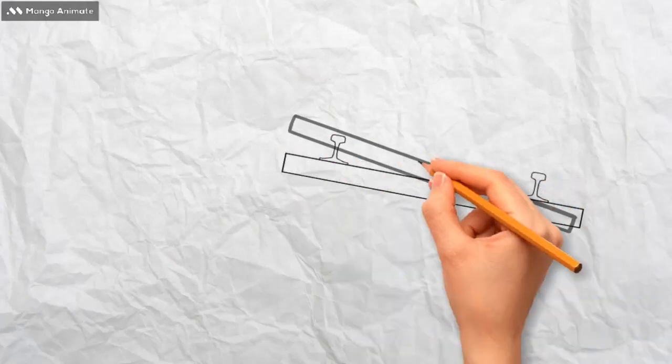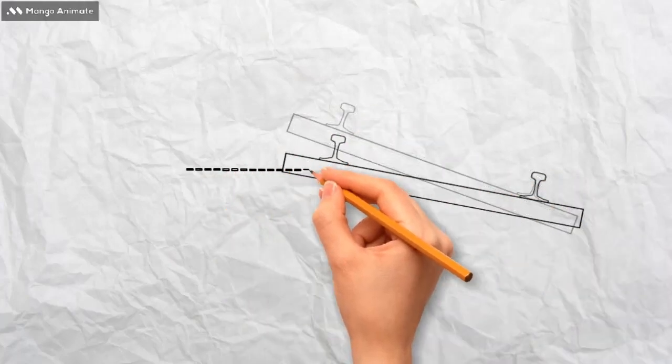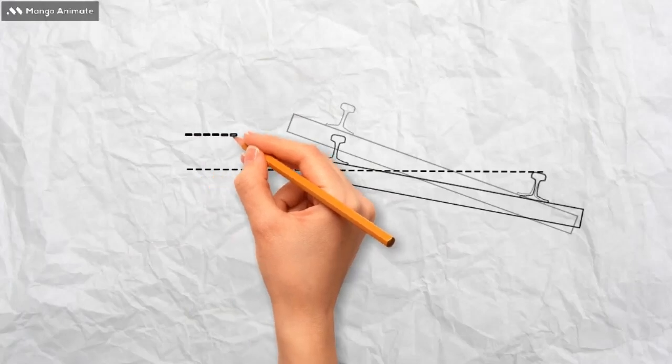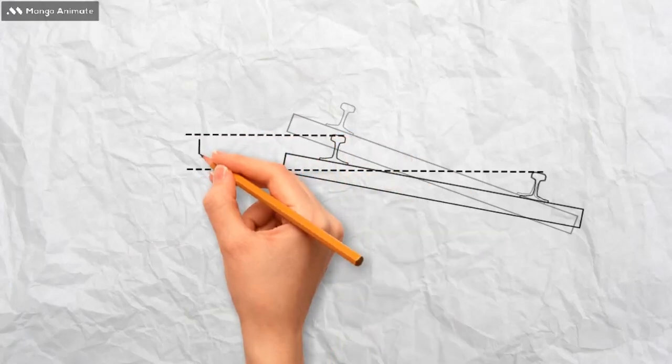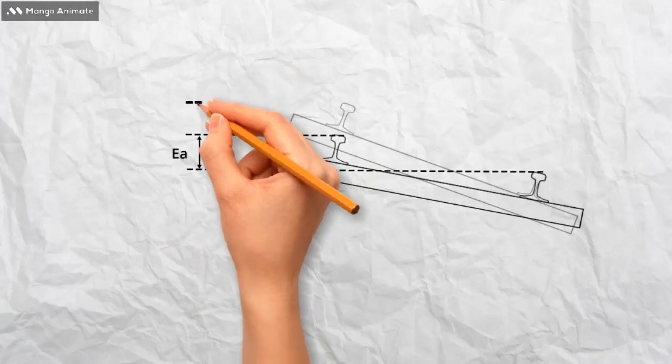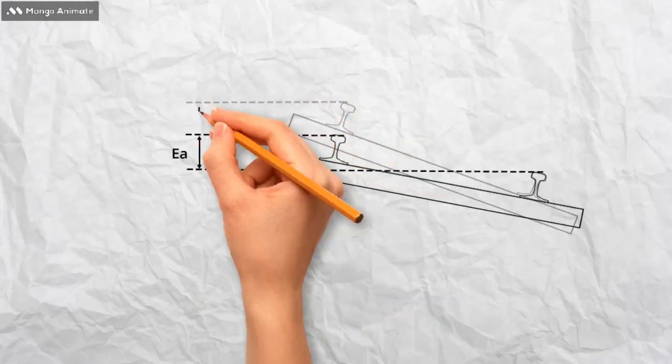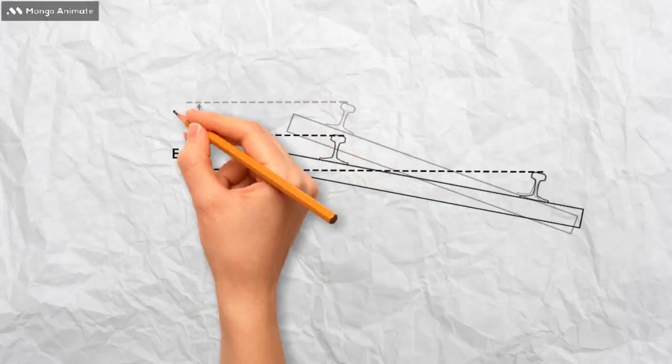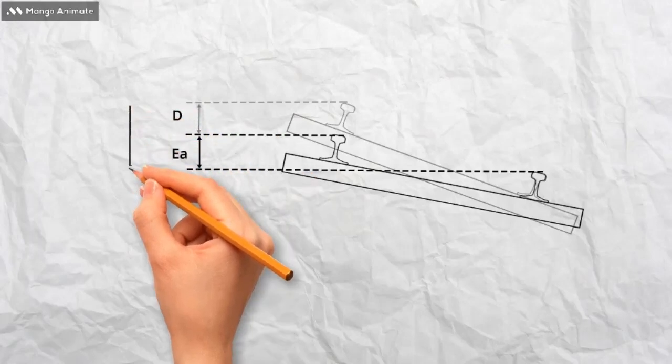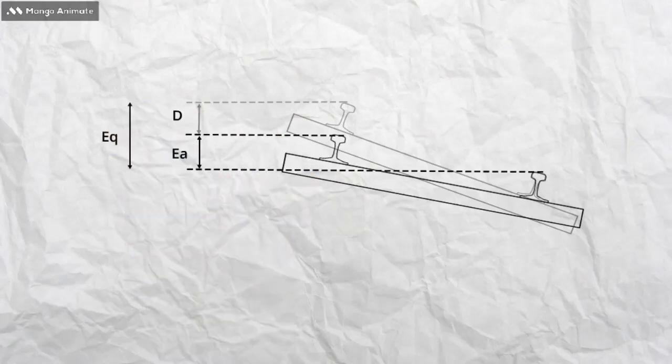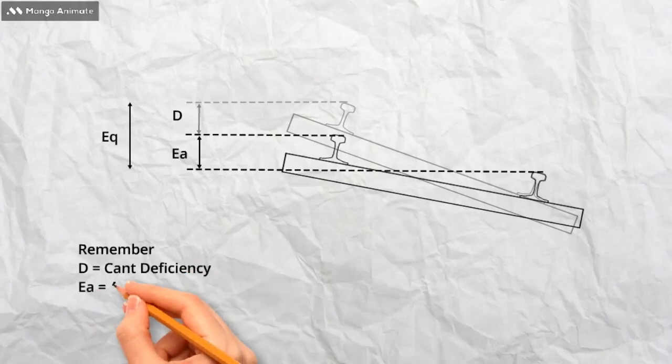Here, we have the track with the left rail lifted, to the value of applied cant, ea. In the background, you see the pale outline of the track if it was lifted to the equilibrium cant value. The difference between the two track outlines is the cant deficiency, or d. With the symbols added, we can see how the equation is formed.